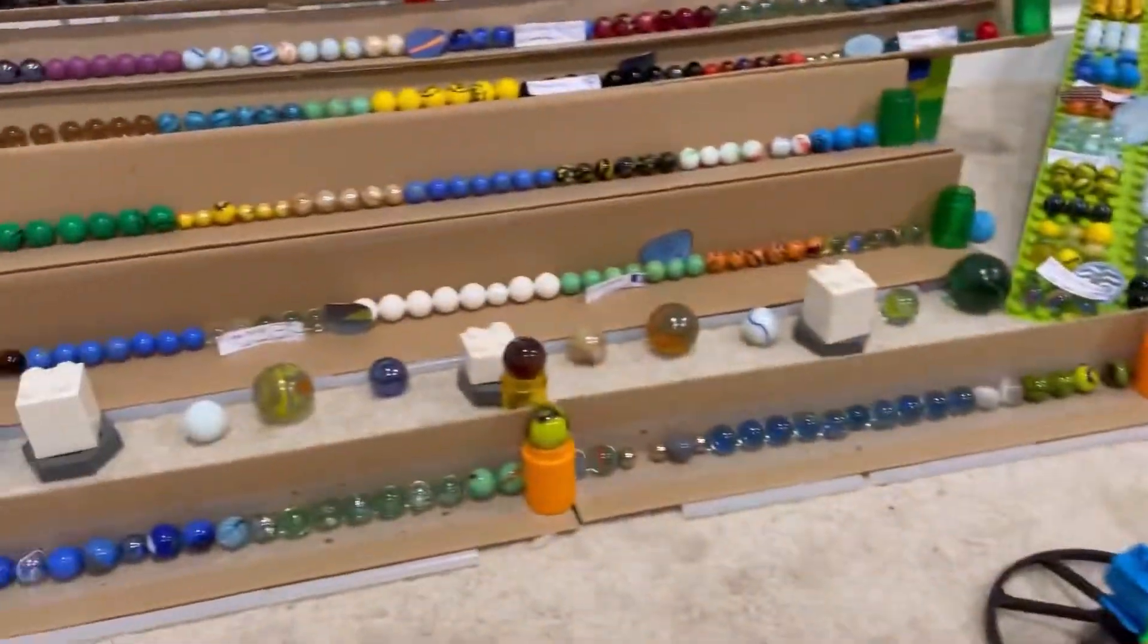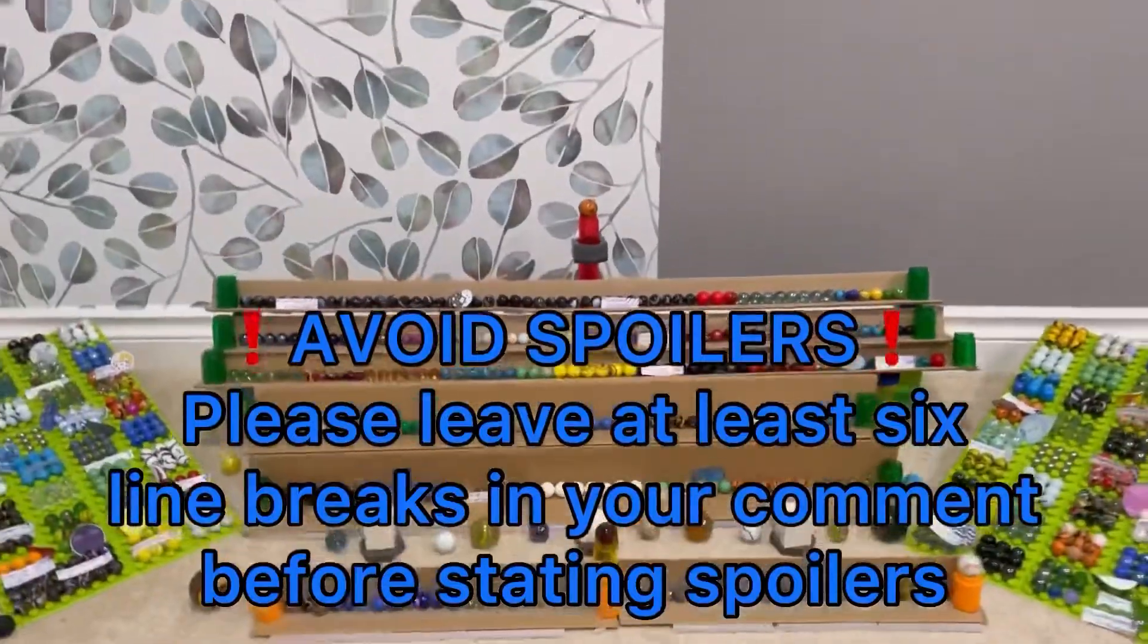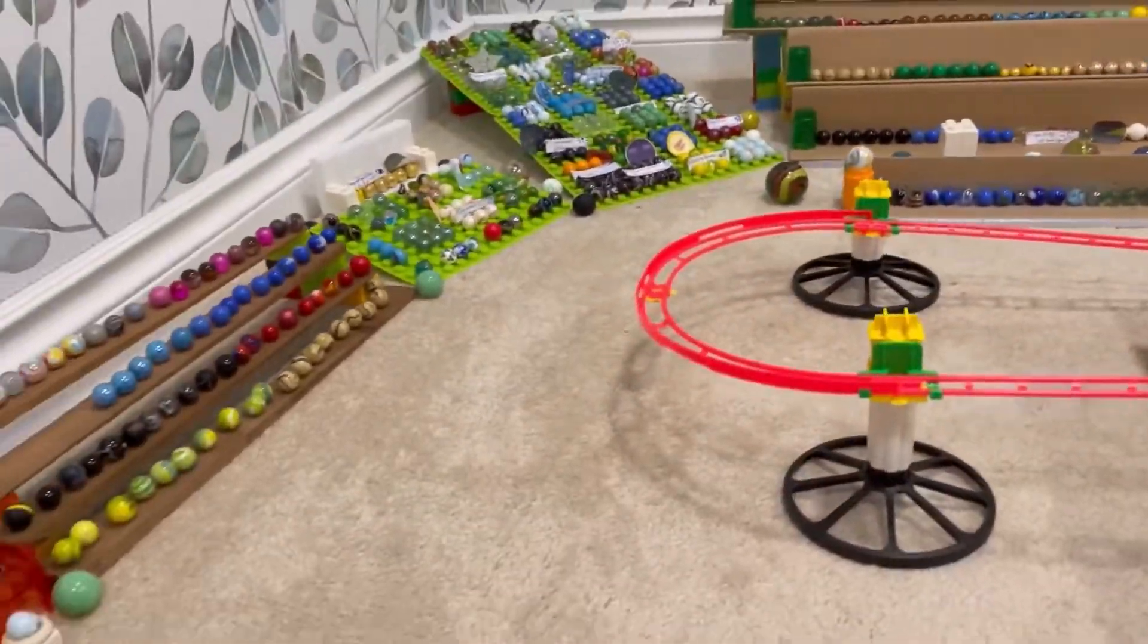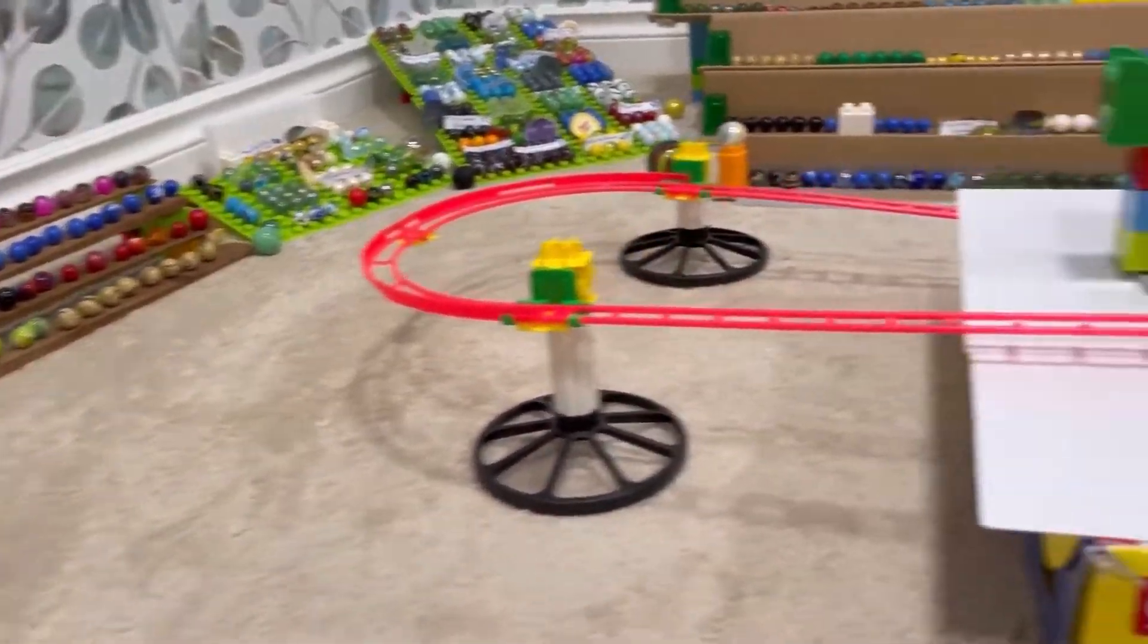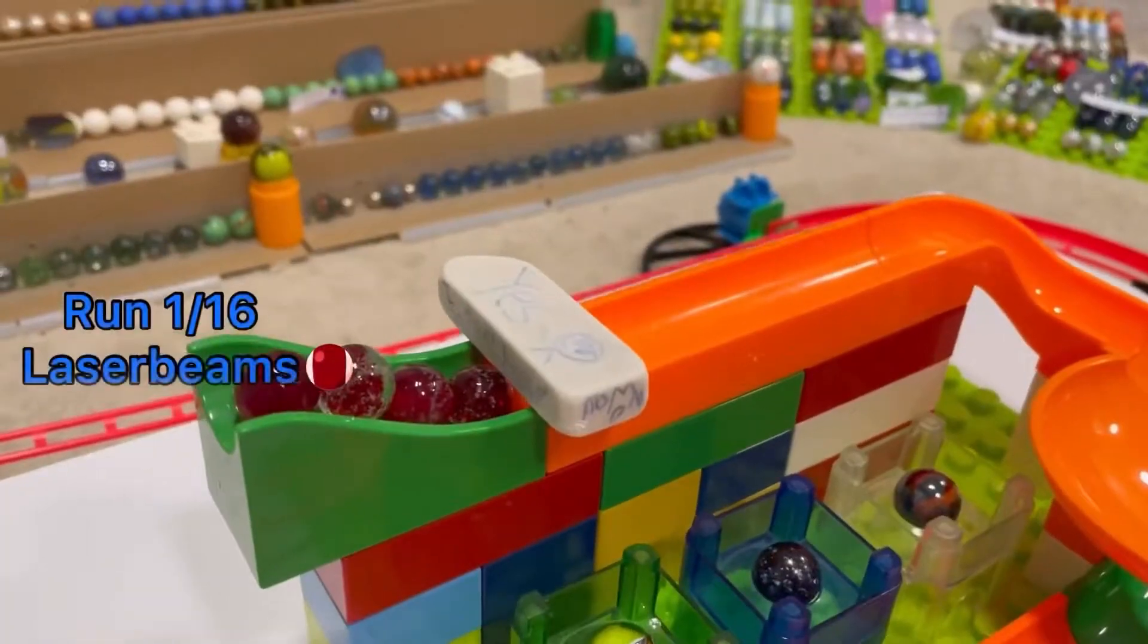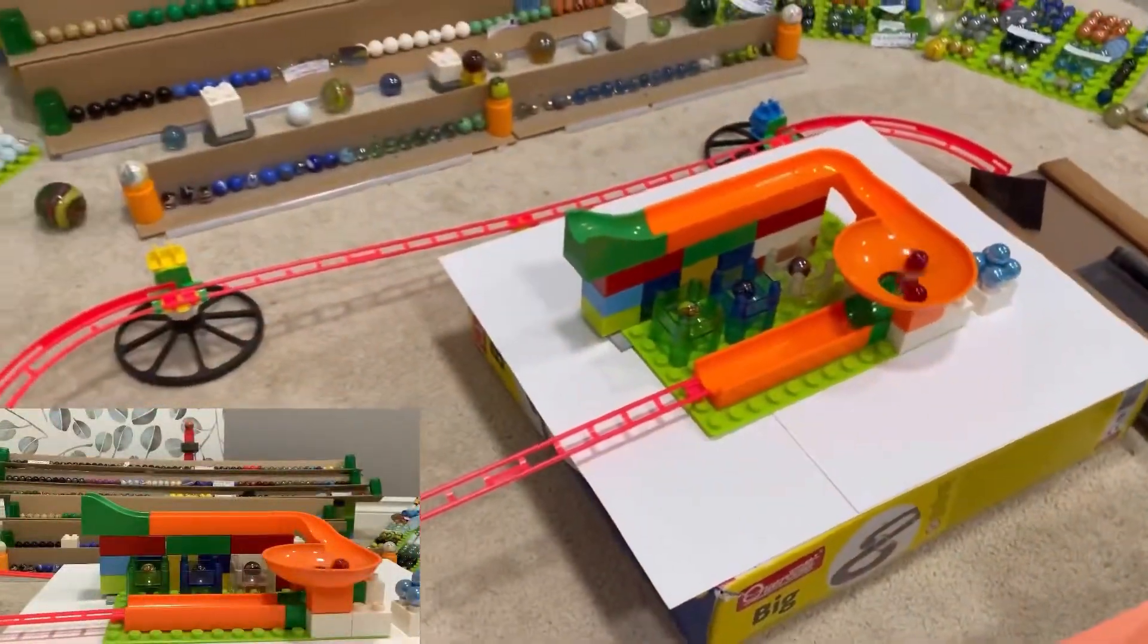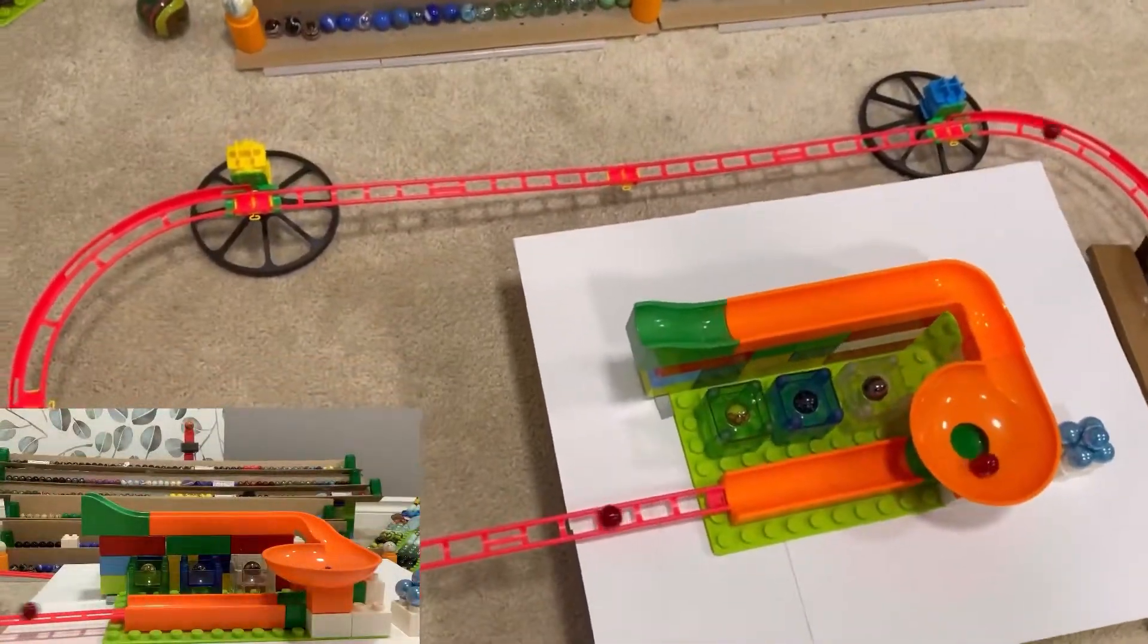Once again, the scores will be determined by the marble that finishes third, plus the distance between him and the first marble to make it all the way to the end, and plus two second penalty for every marble getting stuck. By that I mean just if one marble gets stuck, the lowest time total will win gold.